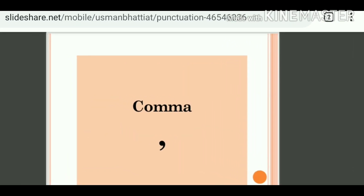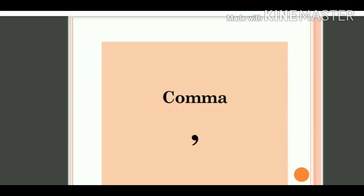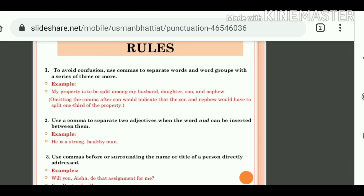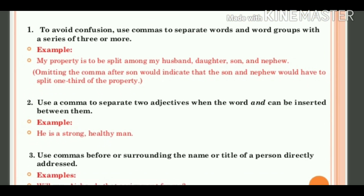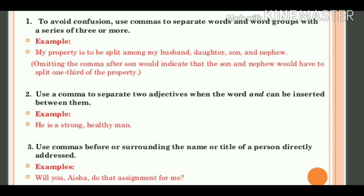Next is comma — how to use comma? The first rule for using comma is: to avoid confusion, use commas to separate words and word groups with a series of three or more. Means, जब हम written form में तीन और तीन से ज़्यादा चीज़ों का description दे रहे होंगे, तो उनको separate करने के लिए हम comma का use करते हैं, ताकि meaning में कोई confusion create न हो. For example: 'My property is to be split among my husband, daughter, son, and nephew.'